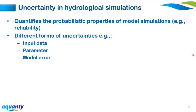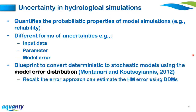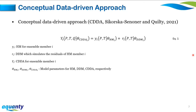To understand why stochasticity matters, we must discuss uncertainty in hydrological simulations. Estimating uncertainty quantifies the reliability of the model — in other words, it questions the model's confidence. There are uncertainties related to input data, model parameters, and model error. Model error uncertainty is especially useful since it accounts for all uncertainties not explicitly modeled. One way to quantify these is a blueprint to convert deterministic to stochastic models using the model error distribution.